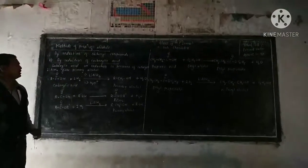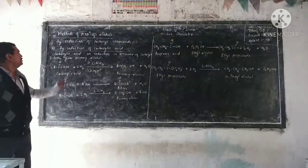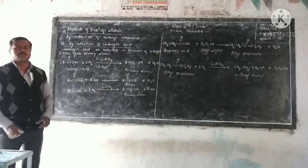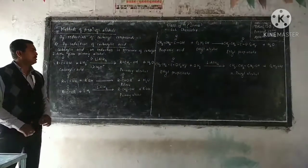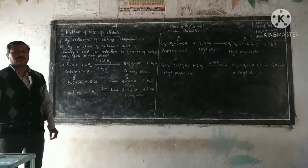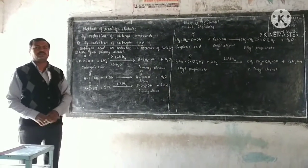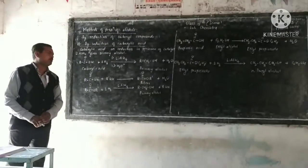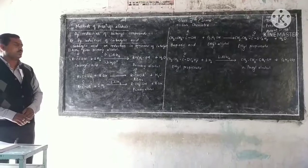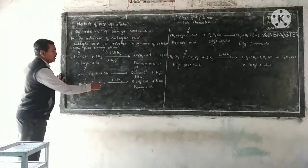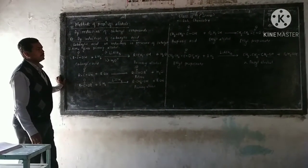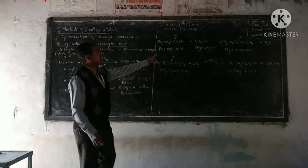The second method of preparation of alcohol is reduction of carboxylic acid. Carboxylic acid on reduction in the presence of a strong reducing agent like lithium aluminum hydride gives primary alcohol. This reaction is carried out in two steps because lithium aluminum hydride is very expensive. First, carboxylic acid reacts with alcohol to produce an ester, then the ester on reduction with lithium aluminum hydride produces primary alcohol.